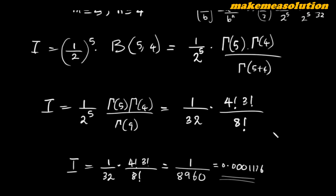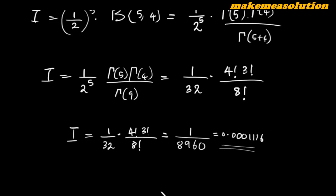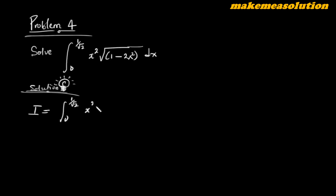This is the answer to Problem 3. Now let's solve one more problem — Problem 4. I = ∫₀^(1/√2) x²√(1-2x²) dx. We'll compare this with the beta function B(m,n) = ∫₀¹ y^(m-1)(1-y)^(n-1) dy.